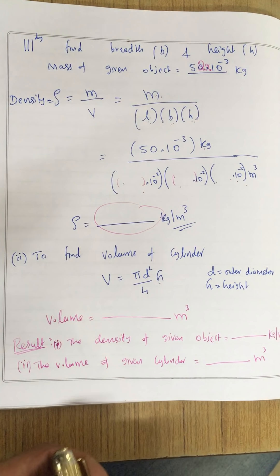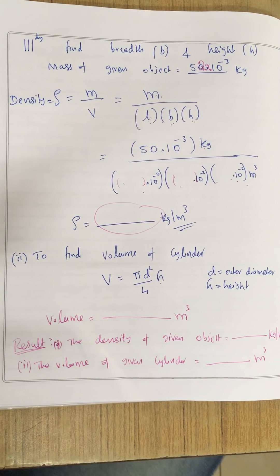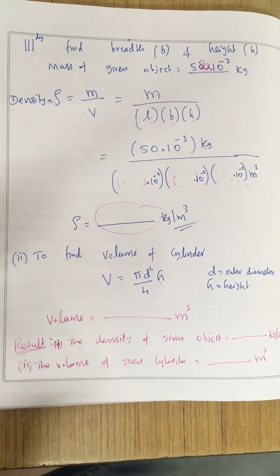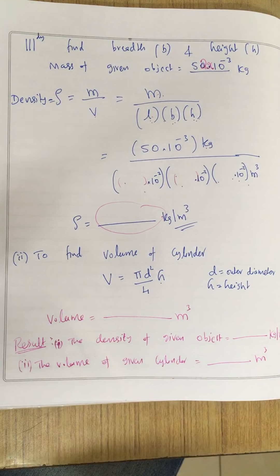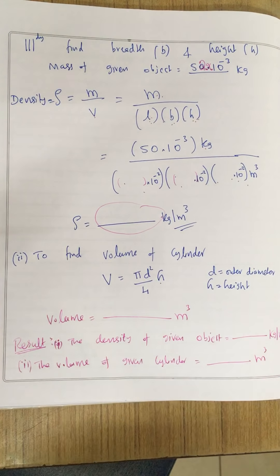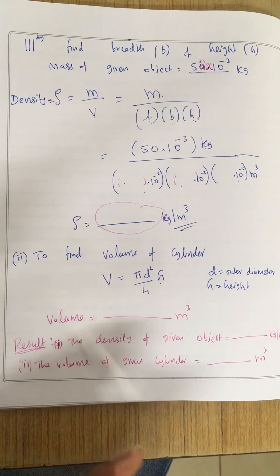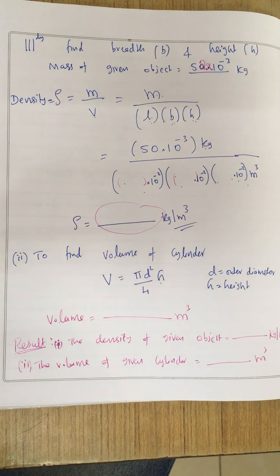So this is how you can find out the volume and density of the object. The benefit here is you can get a more precise value. On a meter scale the maximum value you can get is, for example, 4.6, but with vernier calipers there is the possibility of getting 4.62 or 4.65 because it gives you a more precise value. Thank you for watching this. Share this video among your friends so that they can benefit as well.